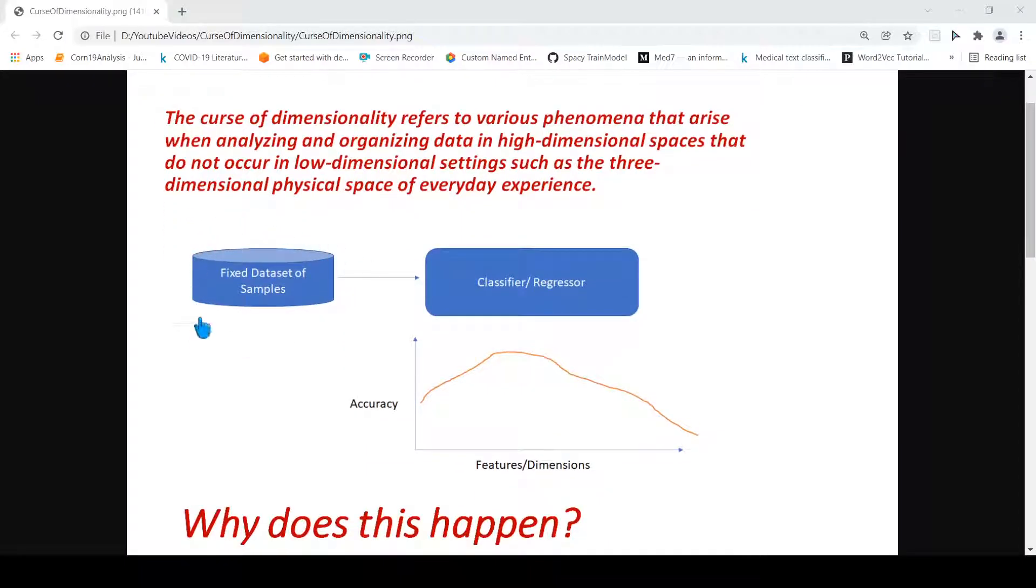Suppose you have a fixed data set where the number of samples are fixed. For example, you have 10,000 data points or say 1000 data points. You want to do some classification or regression depending upon the type of data. So you start with some number of features initially, say five features. You have trained one classifier or regression and you get some kind of accuracy.